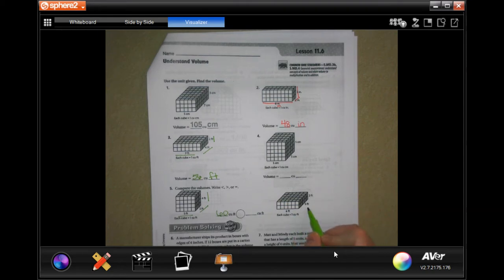And then this one says 6 times 5 which is 30, times 2 which is also 60. These are equal.